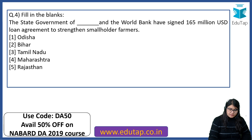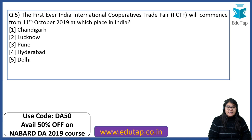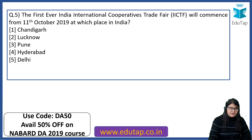I can see a few people answering — hi Kishore, hi Somnath, hi Lokesh, hi Vinny. Great going. Next, the fifth question: the first ever India International Cooperative Trade Fair will commence from 11th October 2019 at which place in India? These questions are taken in context of current affairs with regard to agriculture. The correct answer is Delhi.